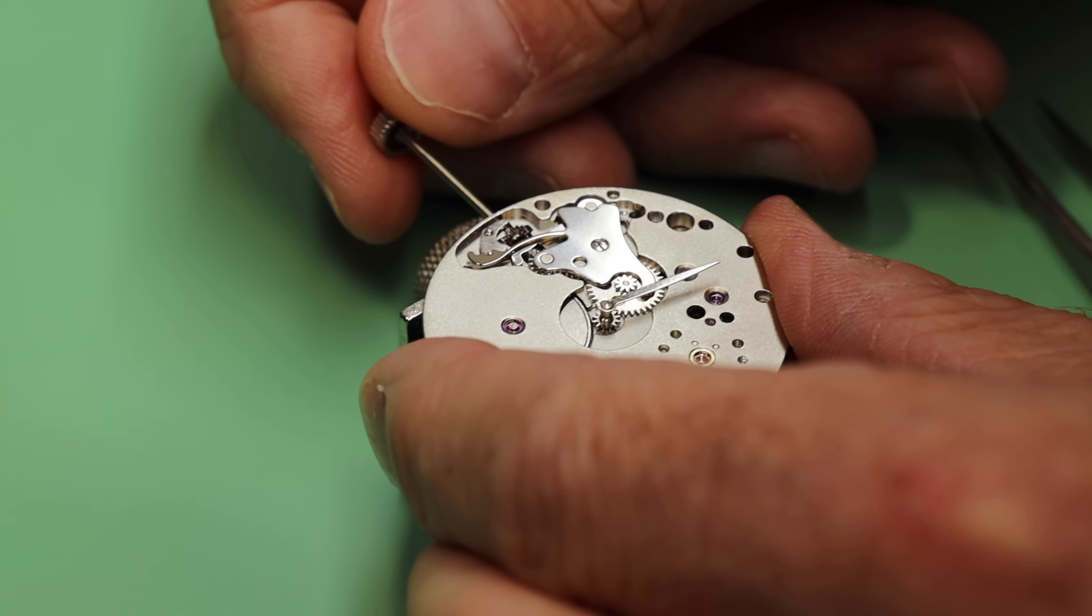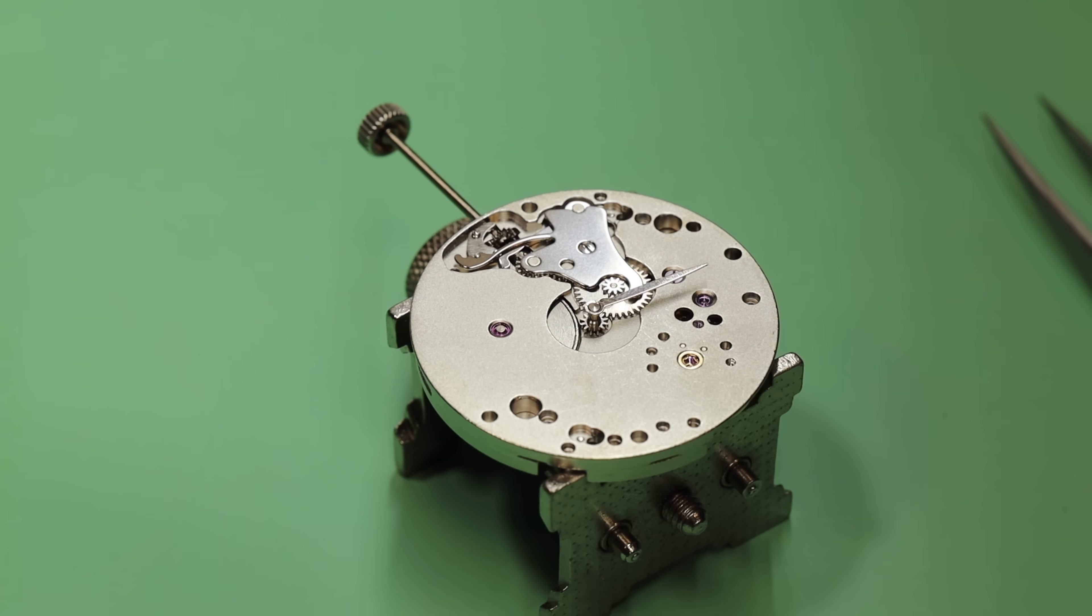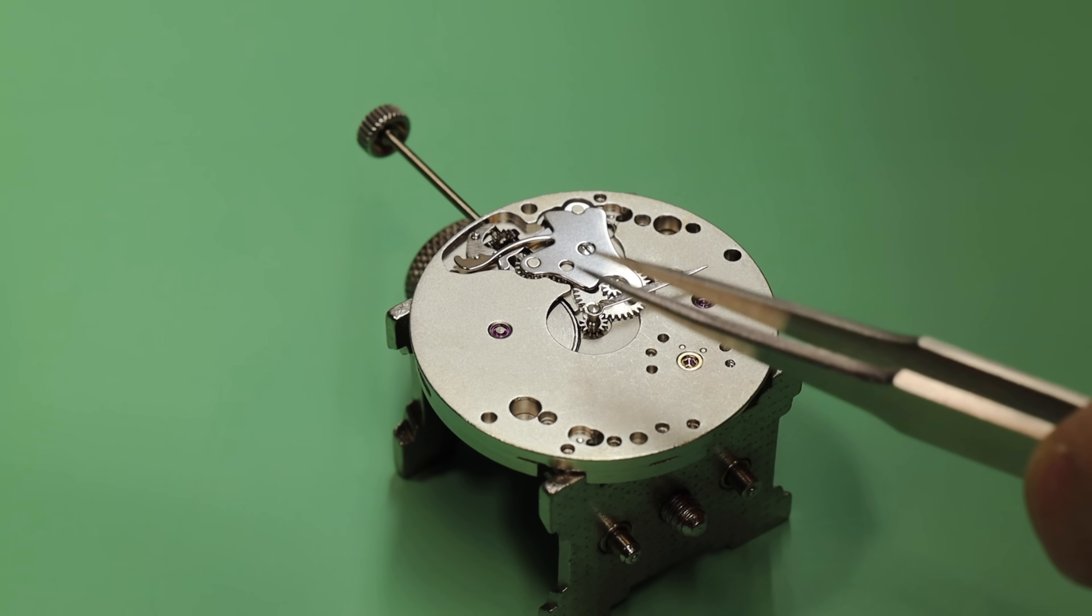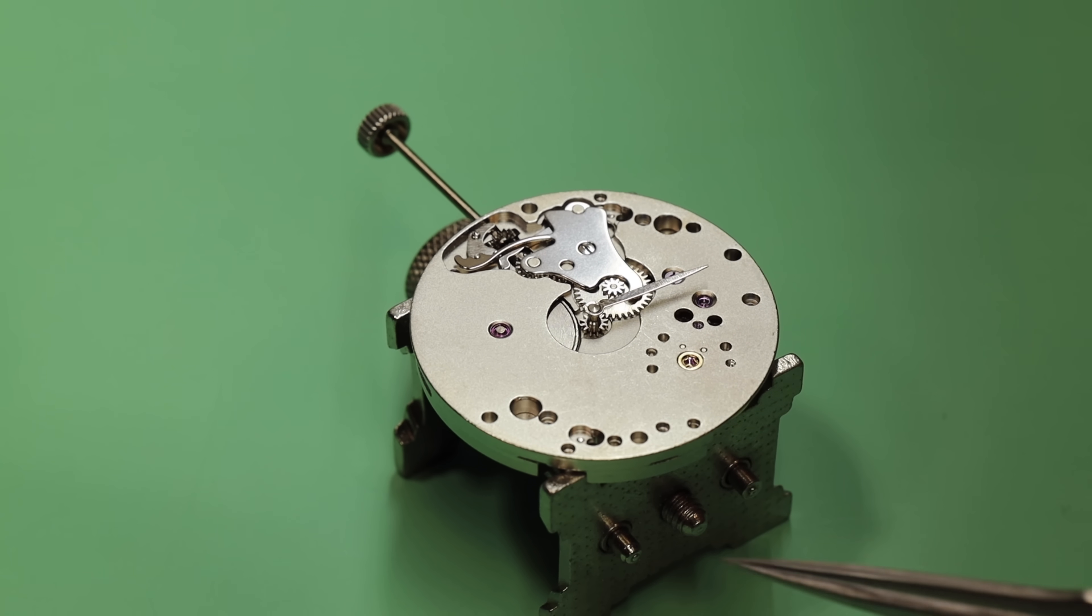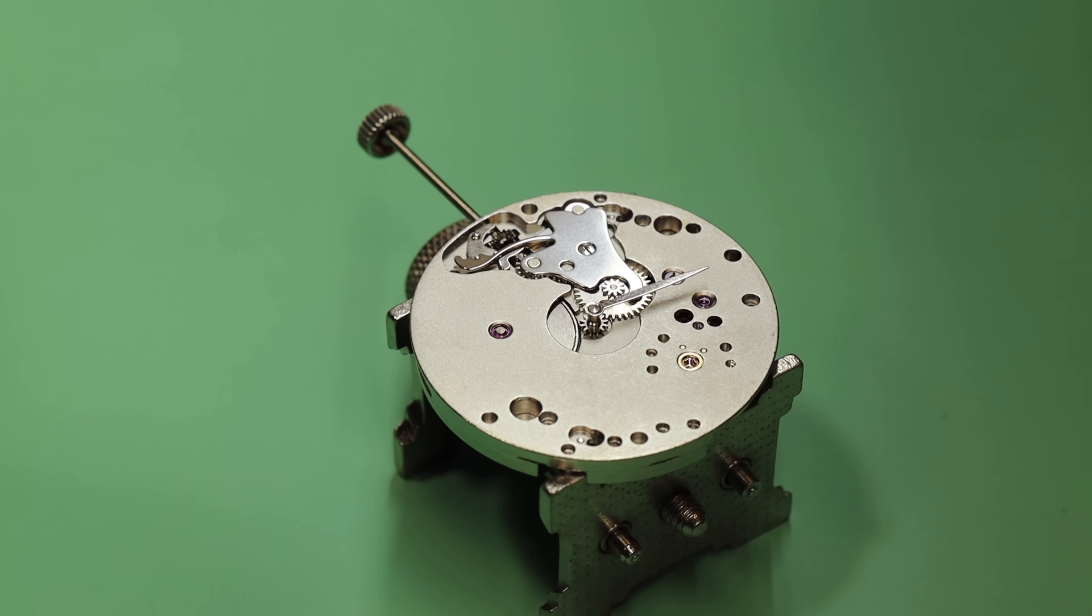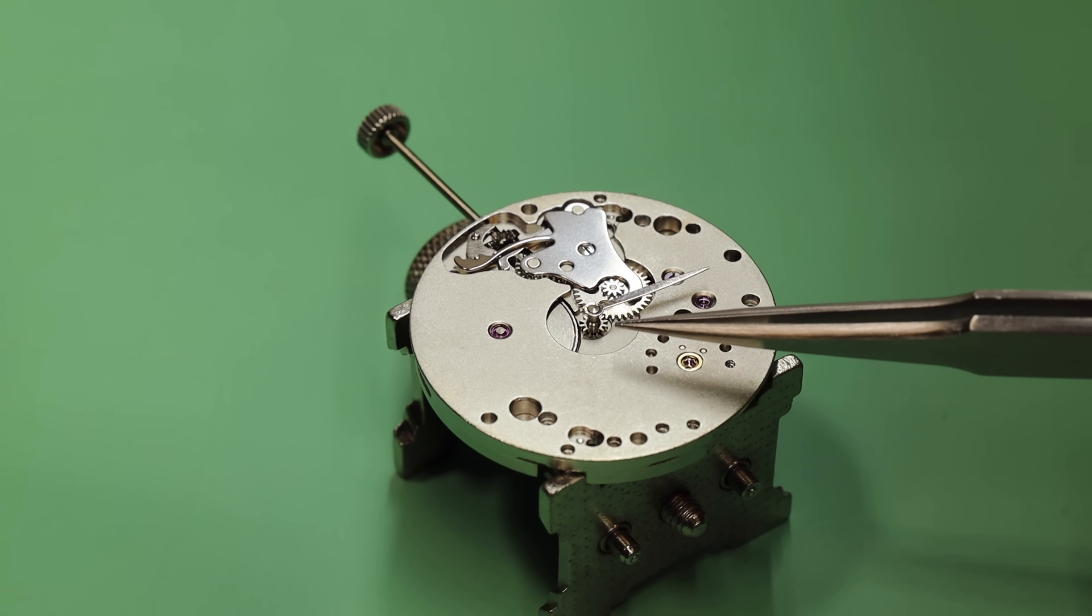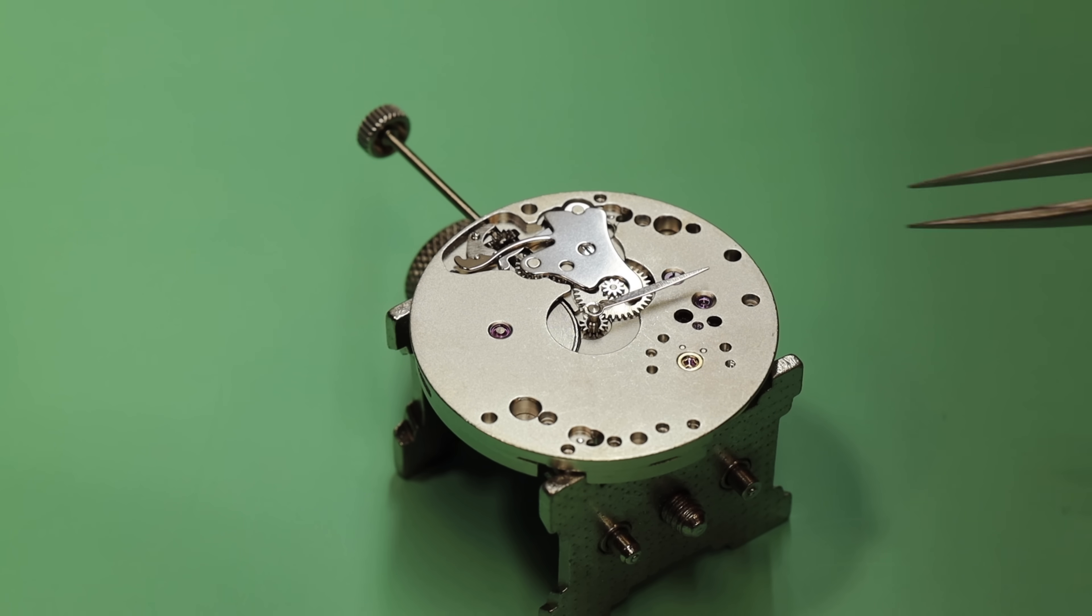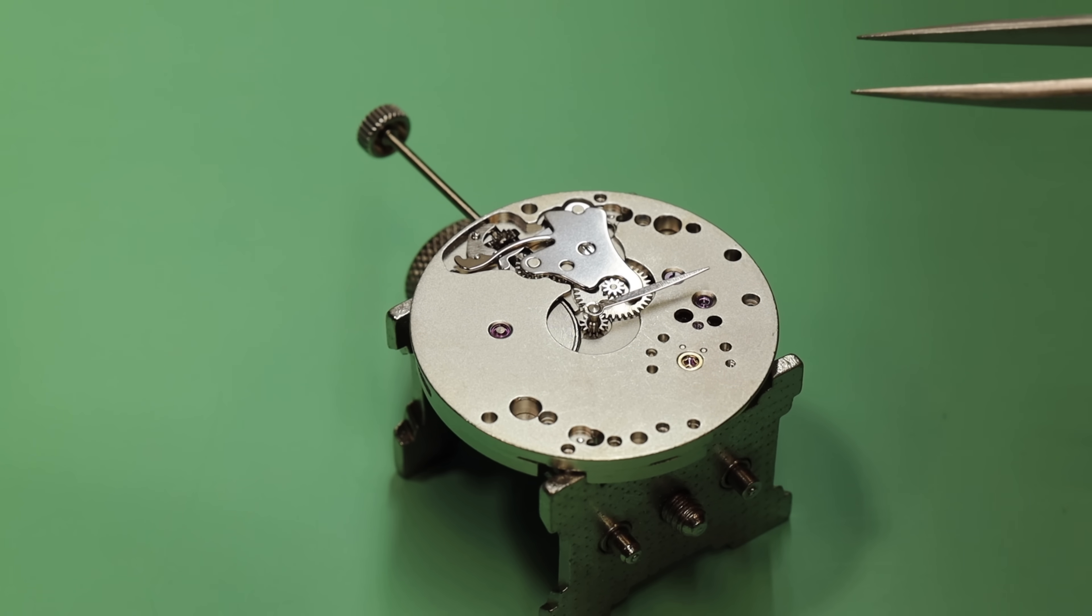So obviously, at some point somewhere, there is a decoupling that's happening. We are decoupling the dial side of the movement from the movement side of the movement, or the gear side. I call them front side, back side, but I guess the technical terms are dial side and movement side. So something is decoupling those two. And what is that thing that's decoupling those two?